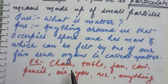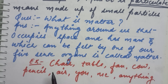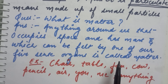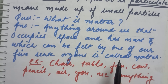Examples of matter include chair, table, fan, cow, pencil, air, you, me — anything around us is known as matter.